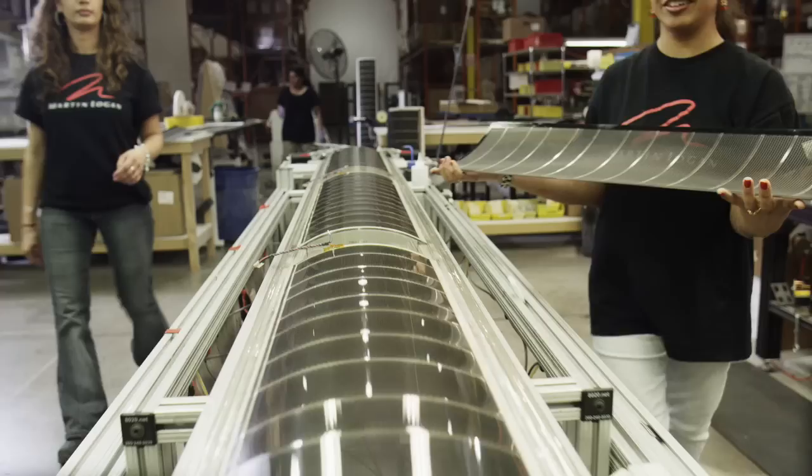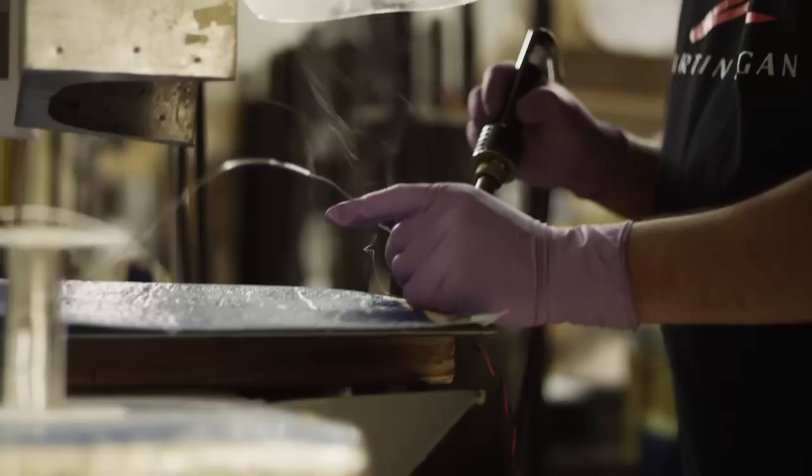Each worker signs off on the assembly they've done. They mark their initials on that particular part. If in fact something goes wrong, we can trace back through the initials on the individual components where that came from and what worker was responsible for that.